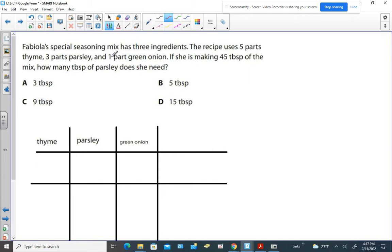Whenever you see a bunch of different things going on, different labels, I would recommend making some sort of a chart to organize your numbers. So if we go through, I see thyme, parsley, and green onion as things that we're using to make the mix.